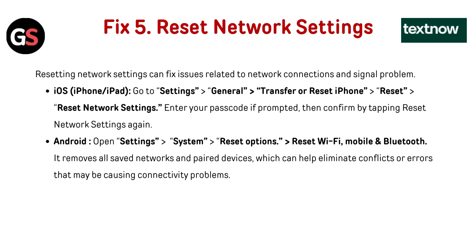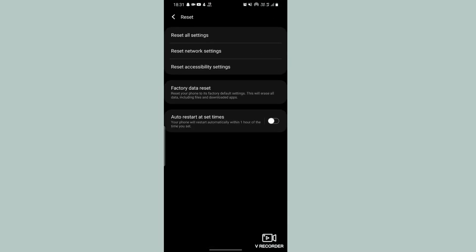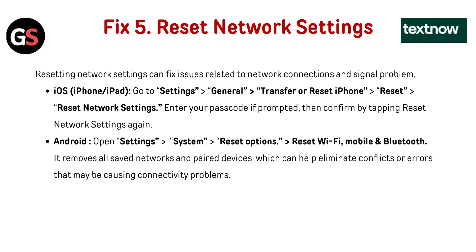Fix 5 — Reset Network Settings: Resetting network settings can fix issues related to network connections and signal problems. For iOS: go to Settings → General → Transfer or Reset iPhone → Reset → Reset Network Settings; enter your passcode if prompted, then confirm. For Android: go to Settings → System → Reset Options → Reset Wi-Fi, Mobile, and Bluetooth. This removes all saved networks and paired devices, which can help eliminate conflicts causing connectivity problems.